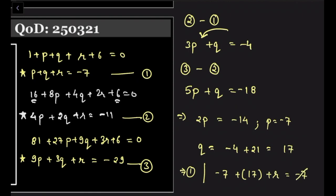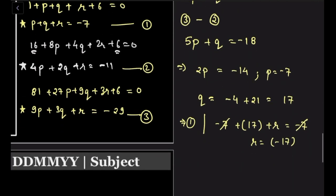Just to verify, let's try to put that in the second equation: 4 × (-7) + 2 × 17 + (-17) should be -11.